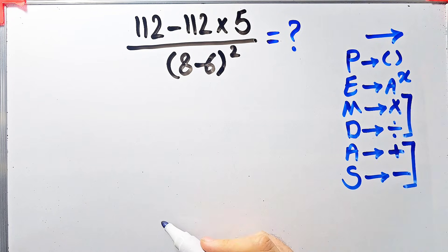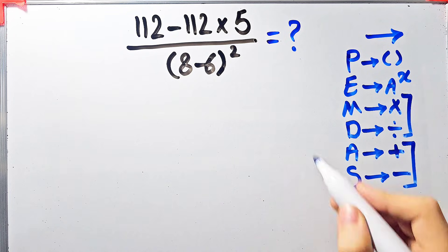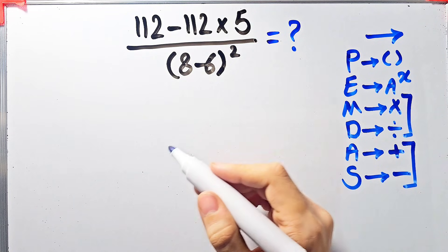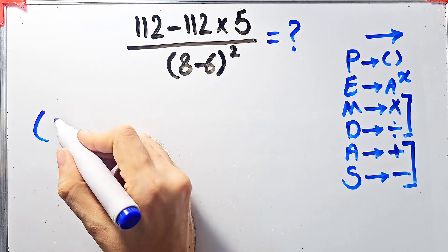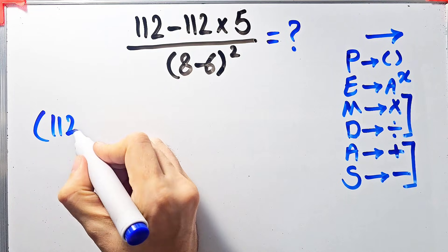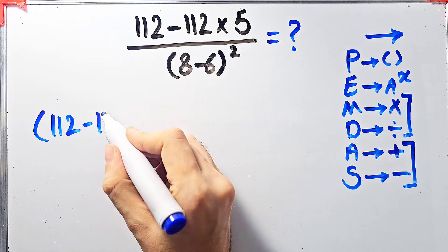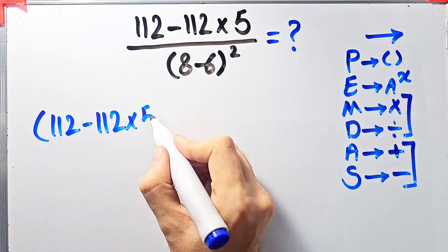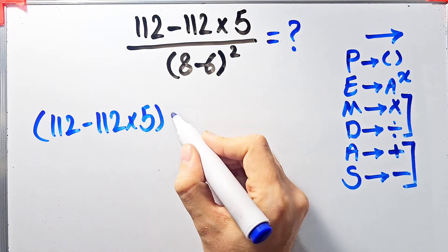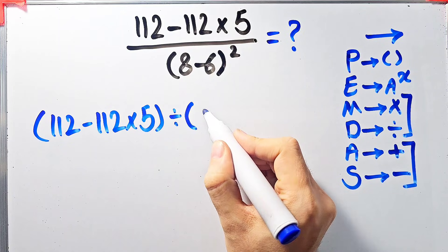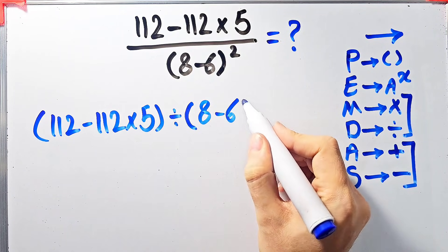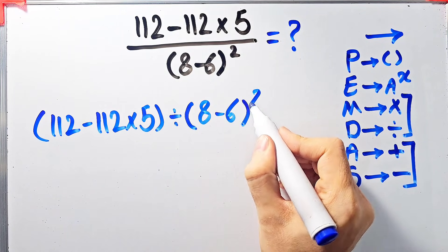Let's simplify and solve this question step by step together. We have 112 minus 112 times 5, divided by open parentheses 8 minus 6 close parentheses, all to the power of 2.